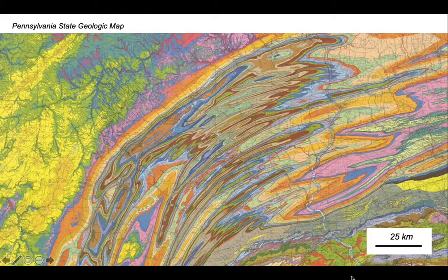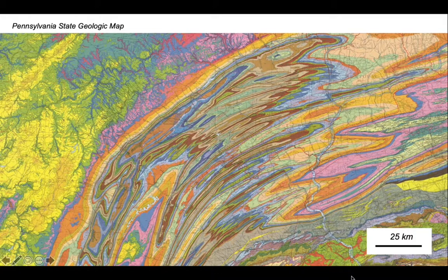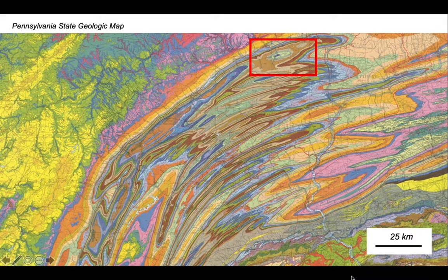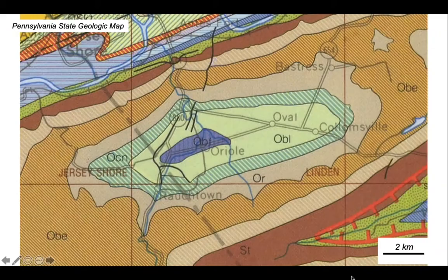So let's turn our attentions to this wonderful geological map from the Appalachians of the USA and Pennsylvania. And we'll just look at one part of it up here, which is quite close to the city of Williamsport. And let's zoom in to that structure. There we go.